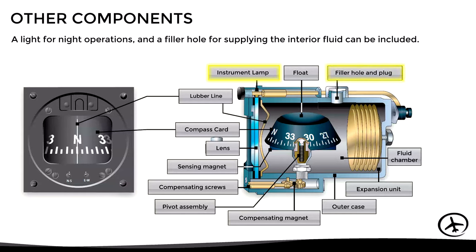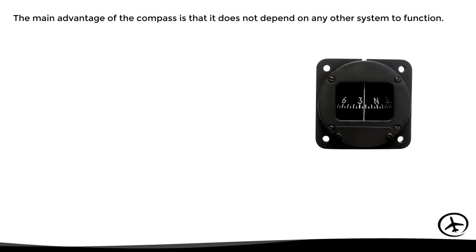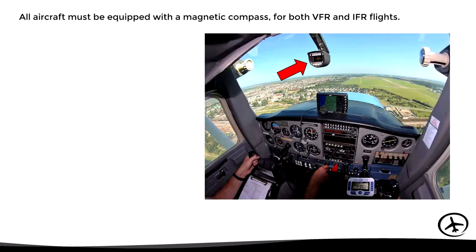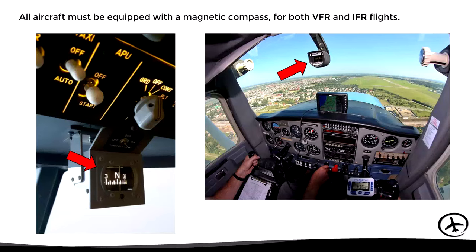Having seen all this, we can say that the main advantage of the compass is that it does not depend on any other system to function. Because unlike other instruments, it does not require electricity, air or vacuum pressure, or pitot-static system information. Therefore, it is very useful as a backup or as an emergency system. This is why all aircraft must be equipped with a magnetic compass for both VFR and IFR flights, from the smallest and most basic aircraft to the largest airliners.